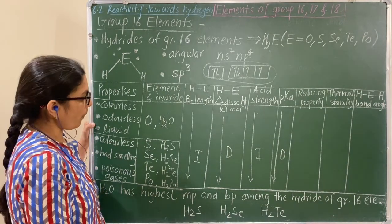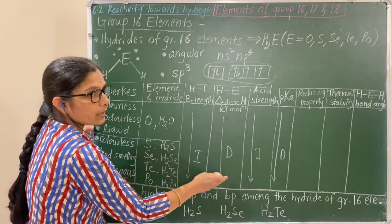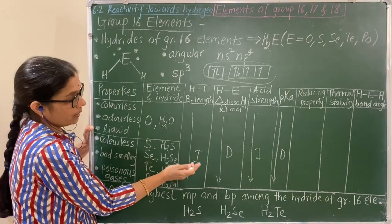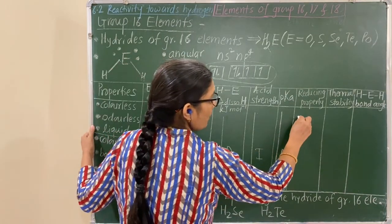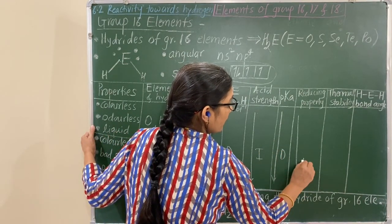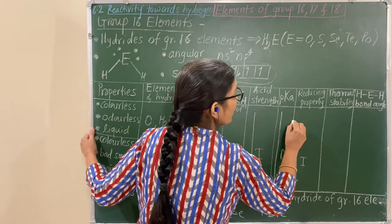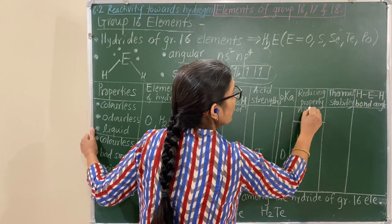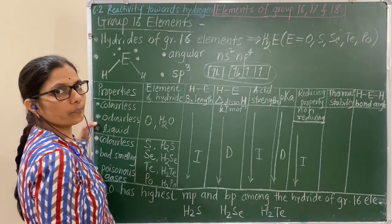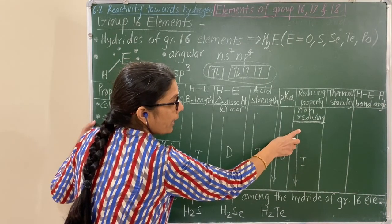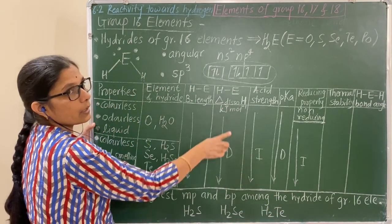Reducing property increases down the group. But remember: water is non-reducing. The remaining hydrides act as reducing agents, and their reducing property increases due to the decrease in bond dissociation enthalpy.